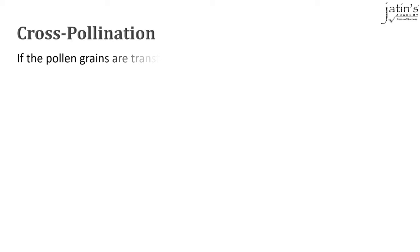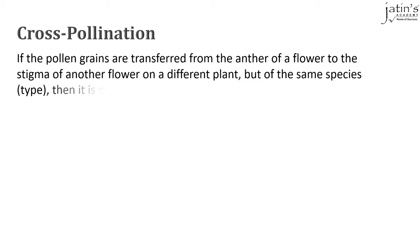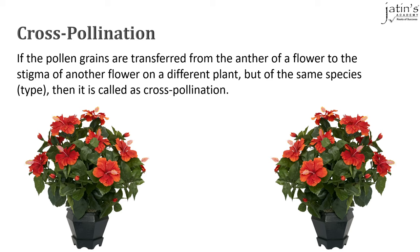If the pollen grains are transferred from the anther of a flower to the stigma of another flower on a different plant but of the same species, then we call such pollination cross-pollination. For example, an agent of pollination visits one plant, carries pollen grains while drinking nectar, and when it sits on another flower of a different plant of the same species, it transfers the pollen grains to that stigma. Such a transfer is called cross-pollination.